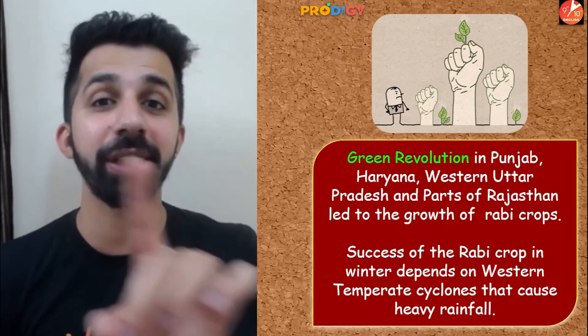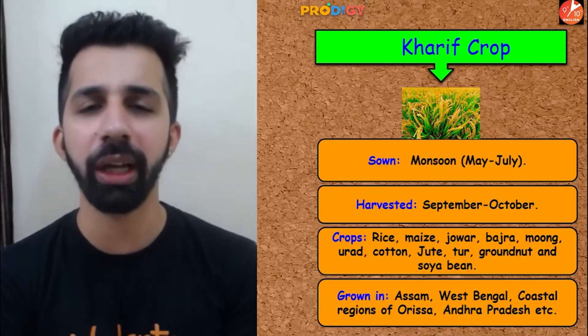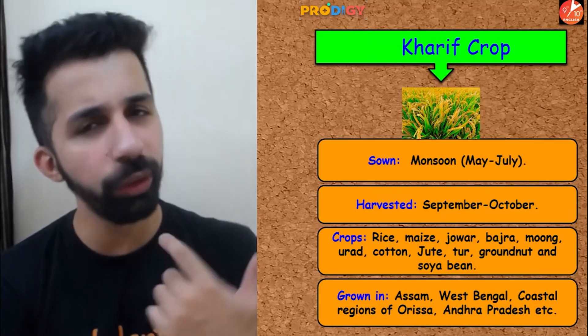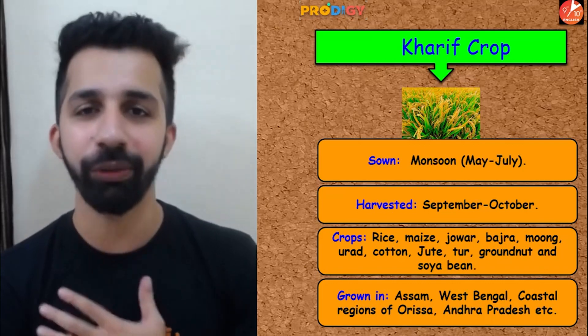The success of Rabi crops in winter depends on western temperate cyclones that cause heavy rainfall. In ninth class, you studied the chapter Climate and the topic of western disturbance, which is one of the factors affecting India's climate — that concept is relevant here. If you are not aware of it, let me know in the comment section so I can make a separate video on it.